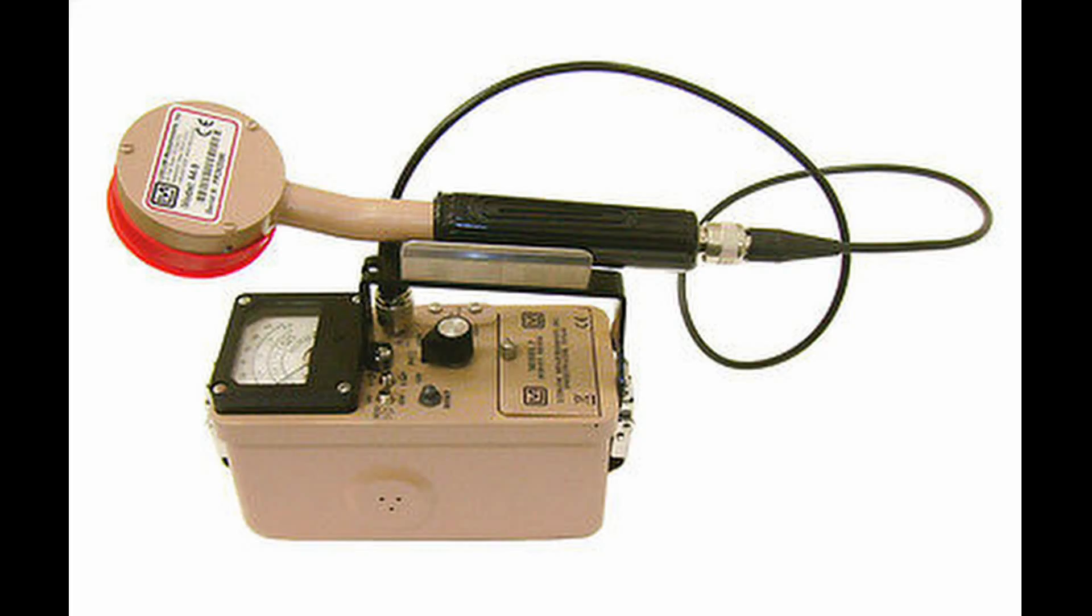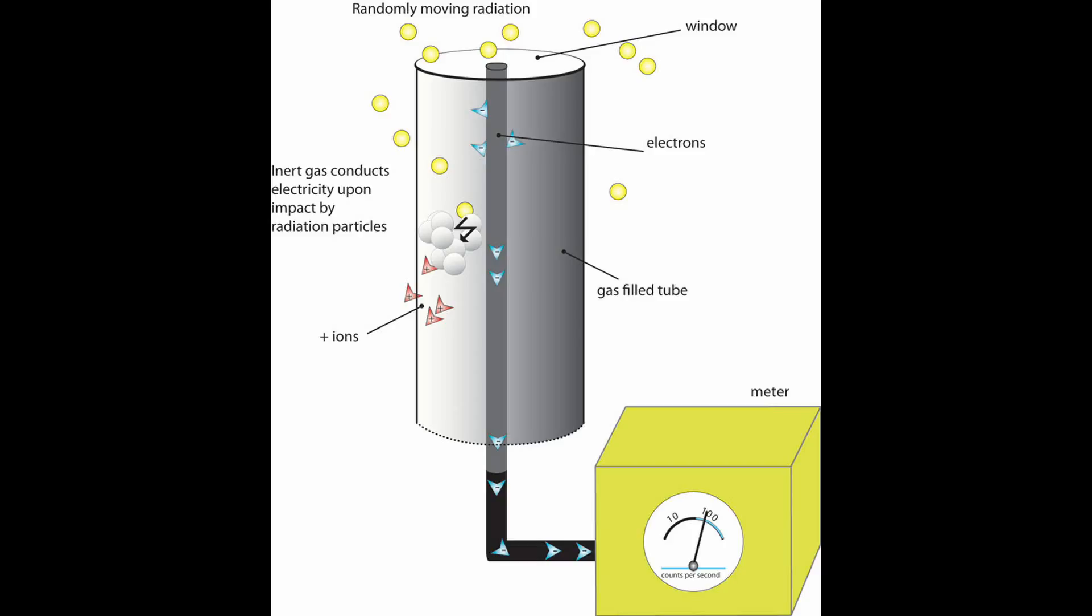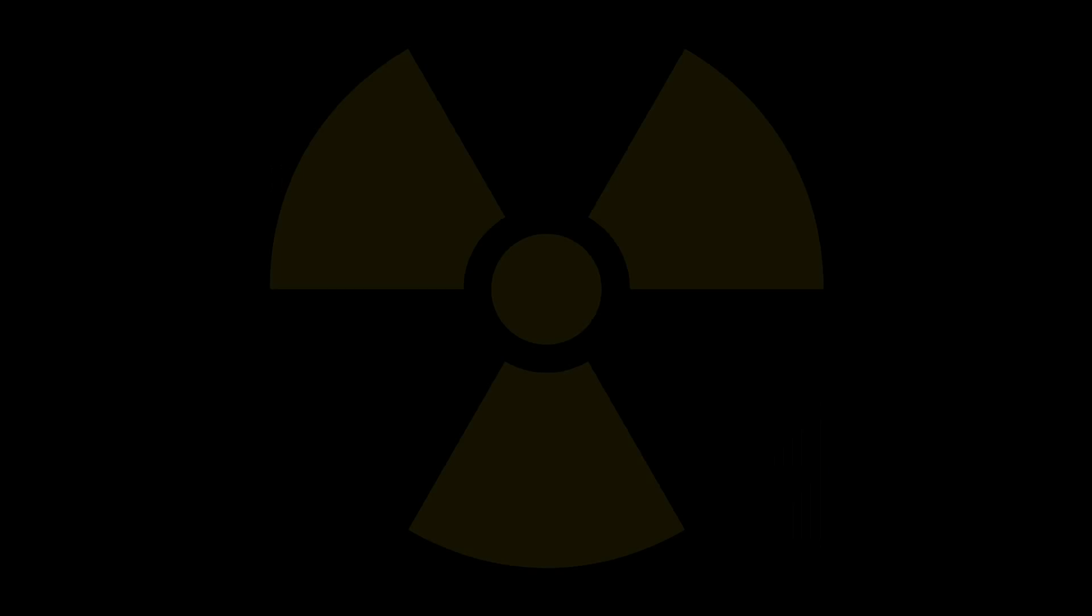The main way radiation is detected is by using a Geiger counter. Geiger counters work because they have a Geiger tube inside of them. The tube is filled with a gas that becomes conductive when it is hit by a high energy particle. The only real downside to these forms of detection is that they cannot tell you what is causing the radiation.